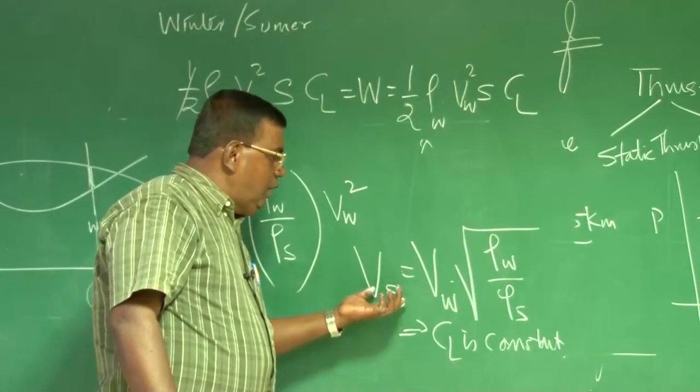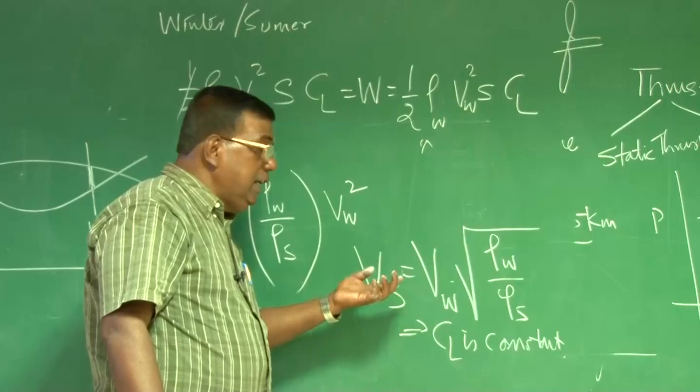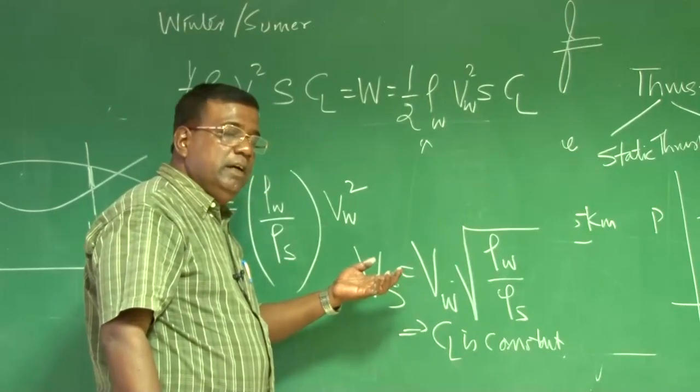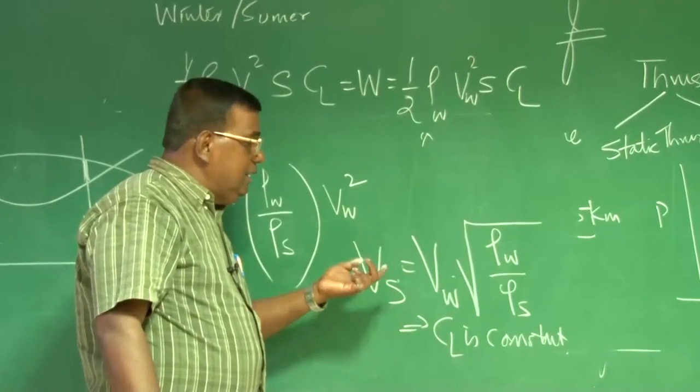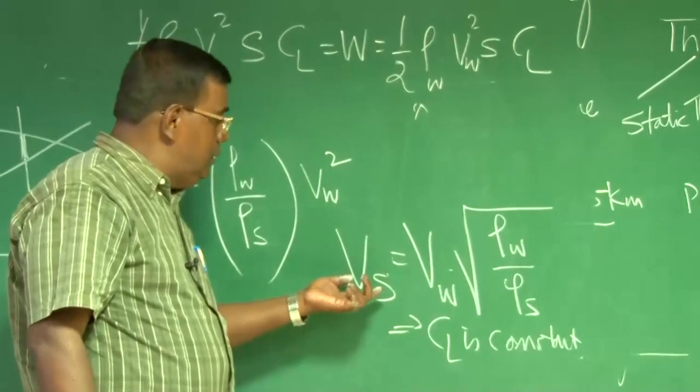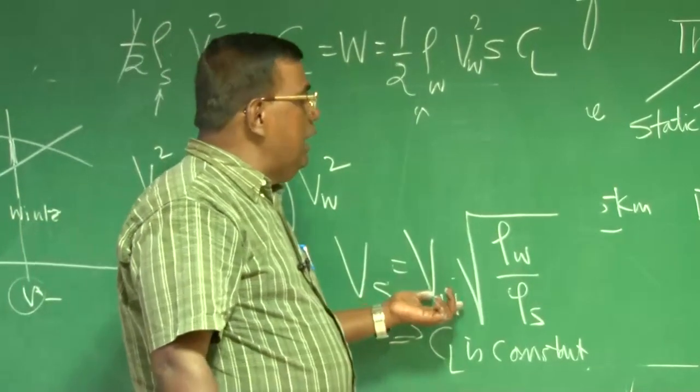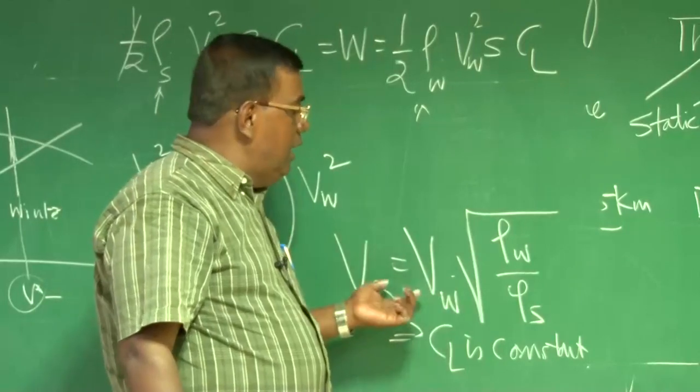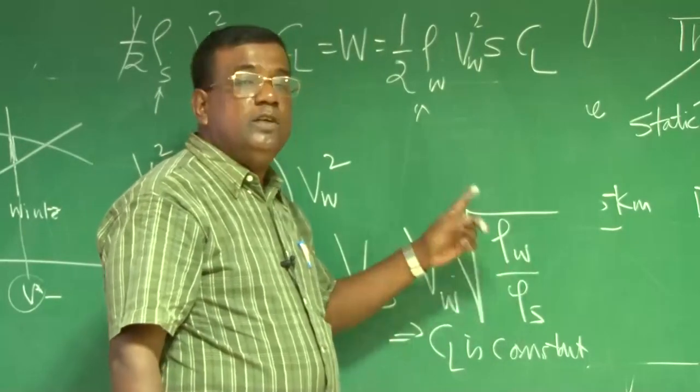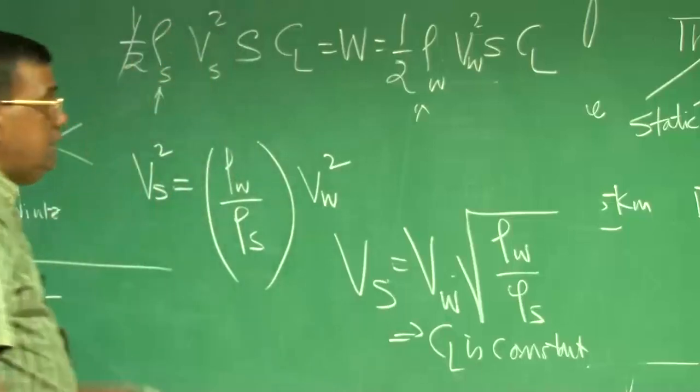But it says if you want to fly same configuration, same CL, then because density of air in summer less than density of air in winter, to get the same output, the speed in summer should be more than speed in winter. By how much? By the square root of this ratio.